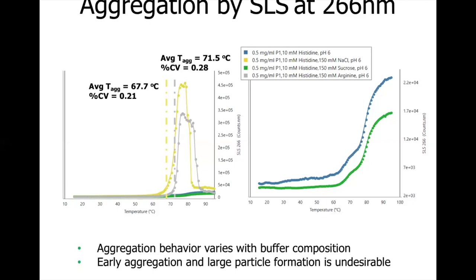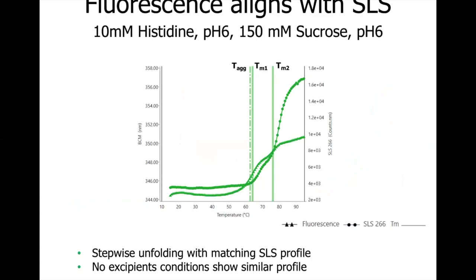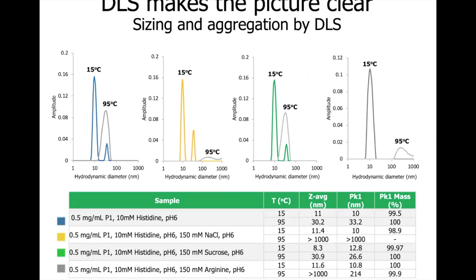Comparatively, there is only a small increase in SLS for sucrose and buffer with no additive, indicating smaller particle formation. The SLS profiles of both buffer conditions show stepwise increases in SLS 266 intensity throughout the temperature ramp. The power of UNCLE is that it collects fluorescence and SLS data simultaneously, allowing for correlation of unfolding and aggregation events. Here is an overlay of fluorescence and SLS thermal profiles for sucrose-containing buffer. We observe a two-step unfolding event with TM1 at 62.2°C and TM2 at 76.1°C, and the SLS profile matches that of fluorescence. The DLS data was collected before and after the thermal ramp — this is optional and user-defined.